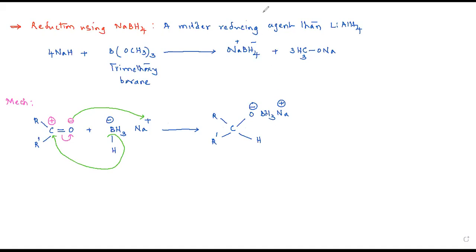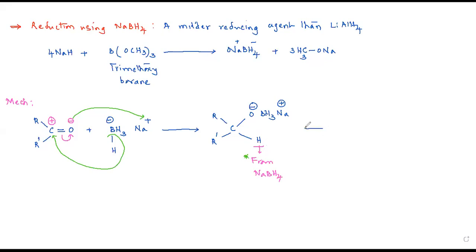Now, you got this hydrogen from sodium borohydride. This point is very important when we actually go for isotopic labeling — that means when hydrogen is replaced by deuterium, this will come into picture.